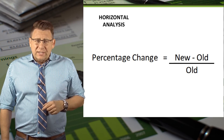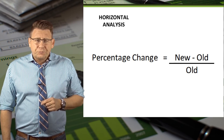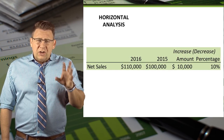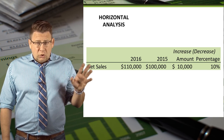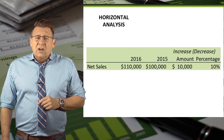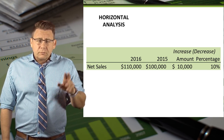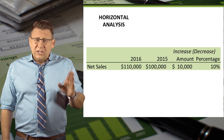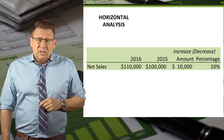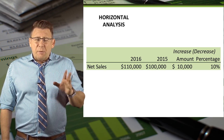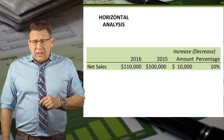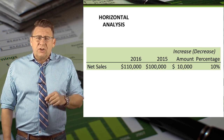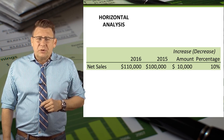Let's look at an example. Our new sales are $110,000 and the old sales are $100,000. So new minus old is an increase of $10,000. Divide that by the old amount of $100,000 to see that sales increased 10%.